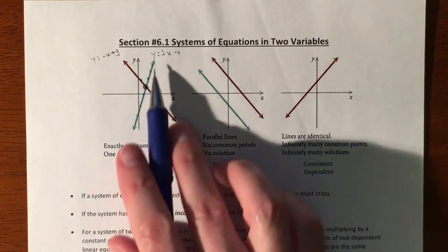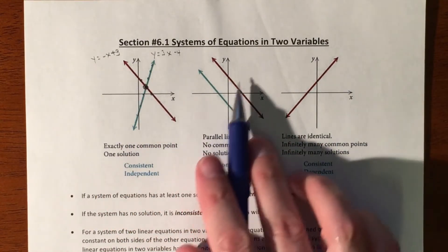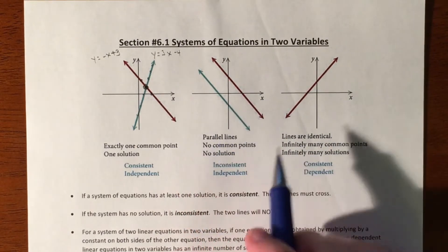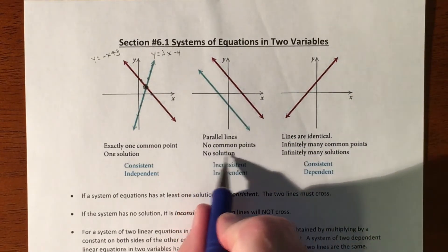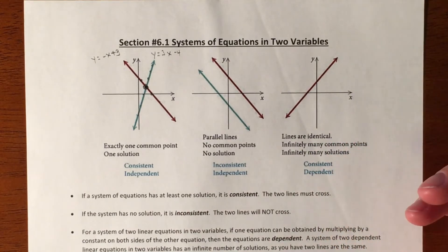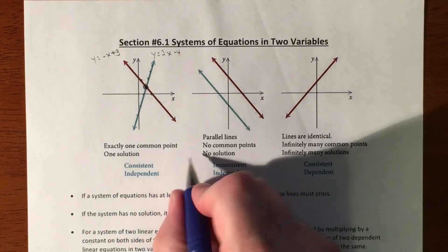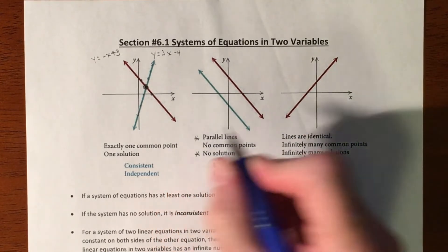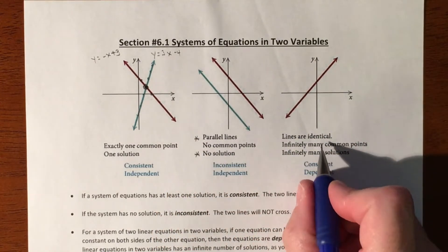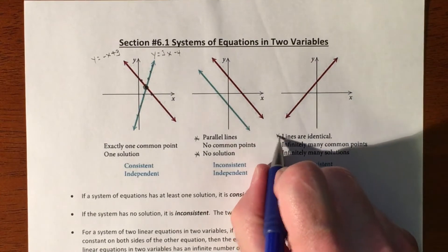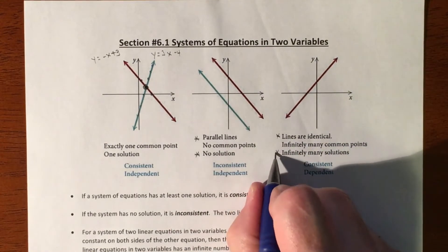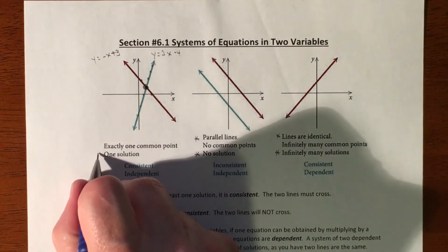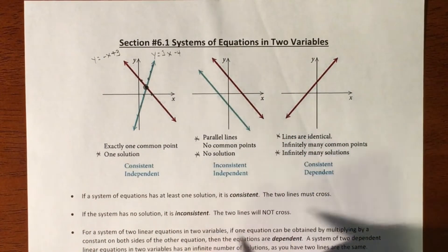At least with linear equations, the lines can cross, the lines can be parallel so they don't share a common point, or the lines could be on top of one another. If they're parallel, you have no solution. If they are the same, then you have infinitely many solutions. And otherwise, the majority of the time, they just cross, so you got one point where they intersect.